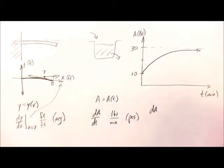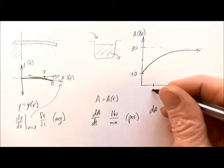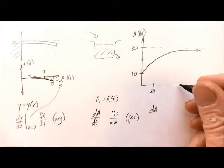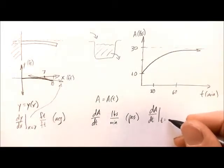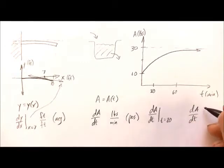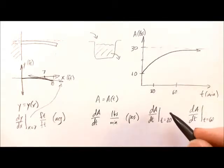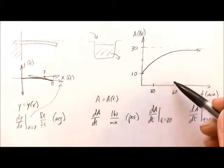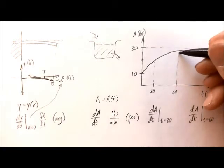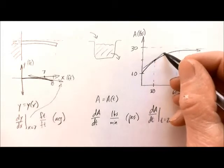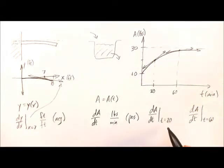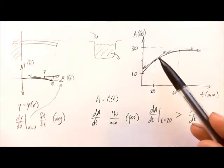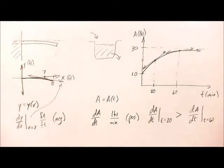If we look at da/dt at time 20 minutes versus da/dt at time 60 minutes, we can see that at 20 minutes the amount of salt is increasing more rapidly than at 60 minutes. We can represent these rates by slopes of tangent lines — so da/dt at 20 minutes is greater than da/dt at 60 minutes. That's the rate at which the amount of salt is increasing; it's increasing more rapidly early on than later. So our derivative is interpreted as a rate, and that's something we want to keep in mind as we proceed throughout this course.